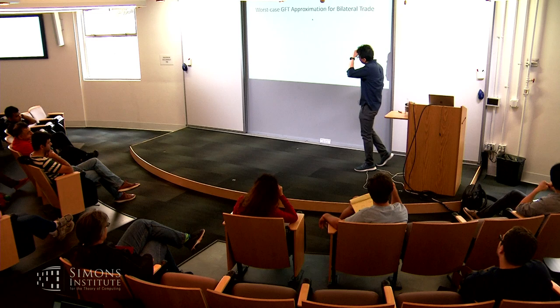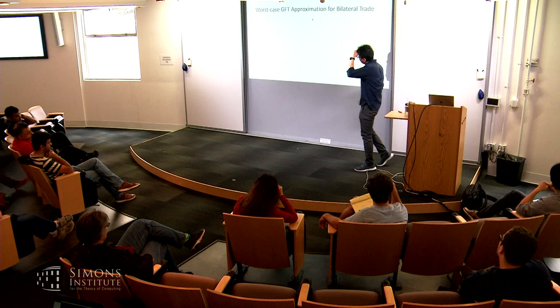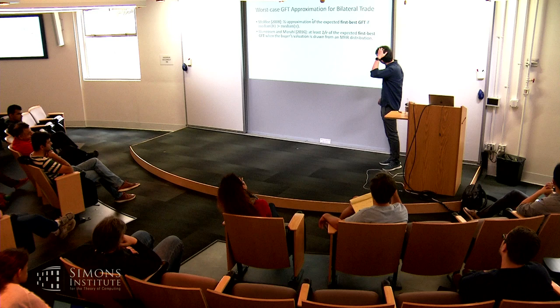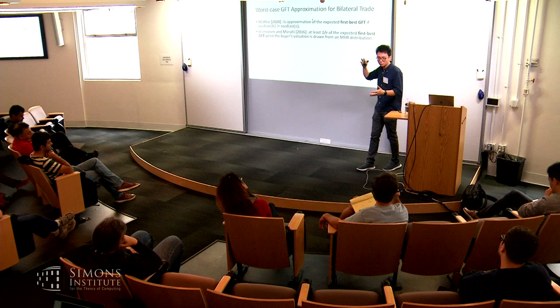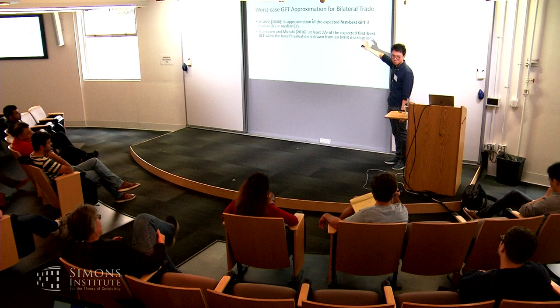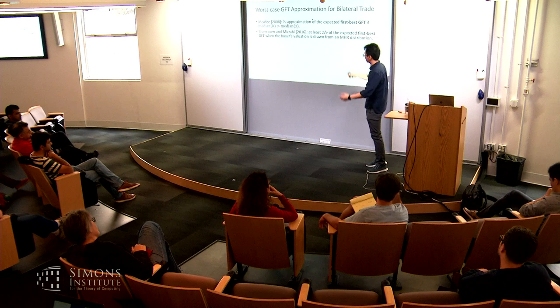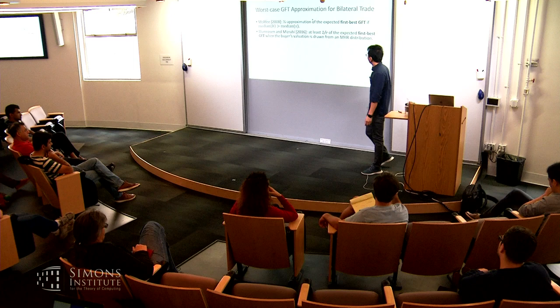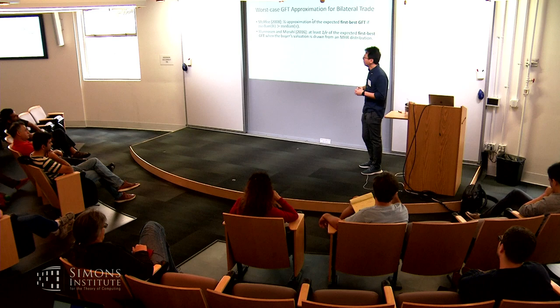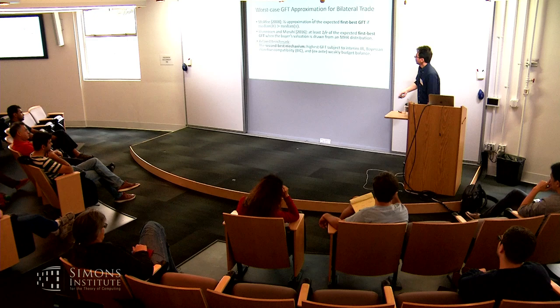Let me give you a mechanism with a worst-case guarantee. If you want to compare to the first-best gains from trade — the highest gains you can get forgetting all constraints like IR, IC, budget balance — we only have conditional results, meaning you have to make assumptions on the distributions. For example, you can get a factor-two approximation if the buyer's median value is higher than the median of the seller's cost, or some tail condition on one of the agent distributions. Even now we don't have a worst-case guarantee compared to the first best without making assumptions on the distribution.